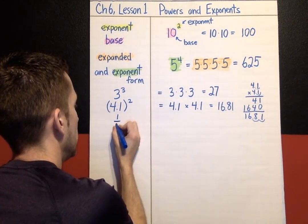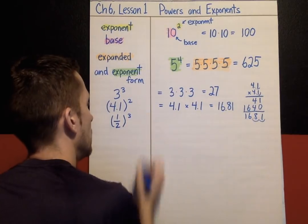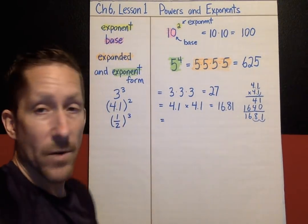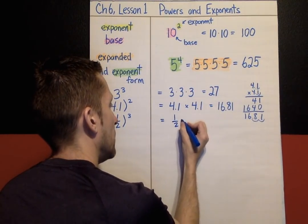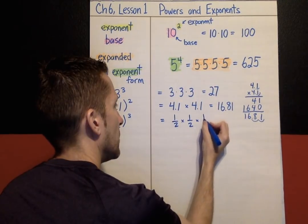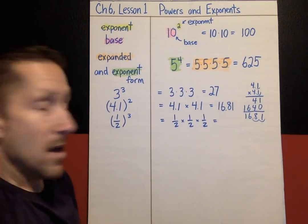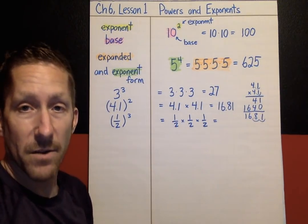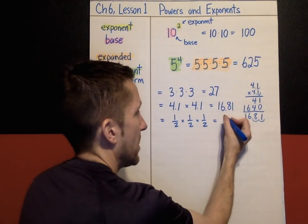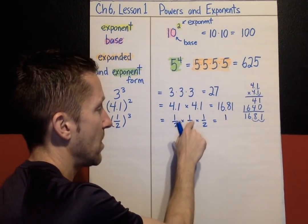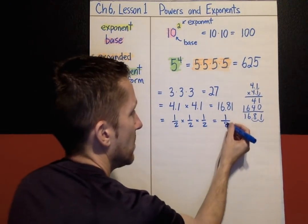Another example: 1 half to the third power. I'm going to write it out in expanded form. This means 1 half times 1 half times 1 half. If I'm multiplying fractions — again, review from a previous lesson — I multiply numerators across: 1 times 1 times 1 gives me 1, and 2 times 2 is 4, times 2 is 8. My answer would be 1 eighth.